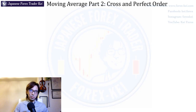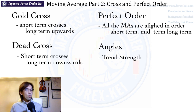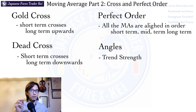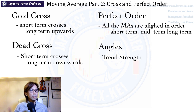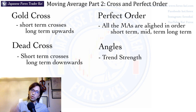First of all, take a look at this. This shows the basic information of what gold cross, dead cross, perfect order, and also the angles are on moving average. The gold cross happens when the short-term MA crosses the long-term MA upwards — short term means like 10 or 20 period, and long term means 200 period. So a gold cross happens when the 10 or 20 MA crosses the 200 MA upwards.